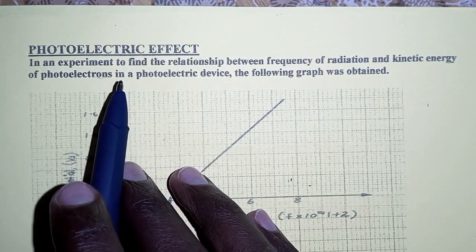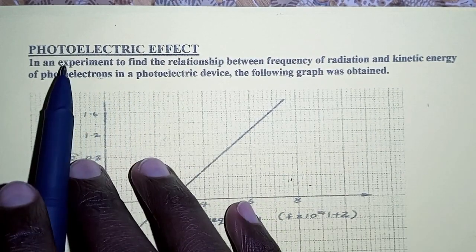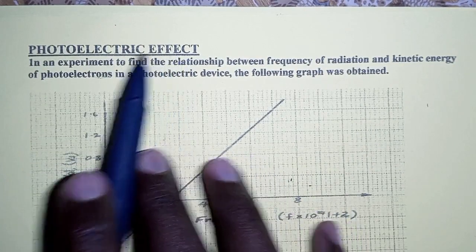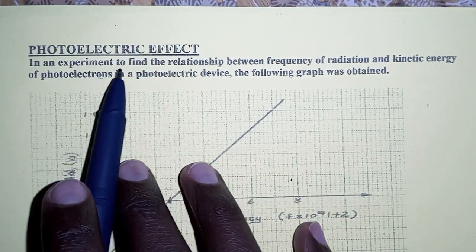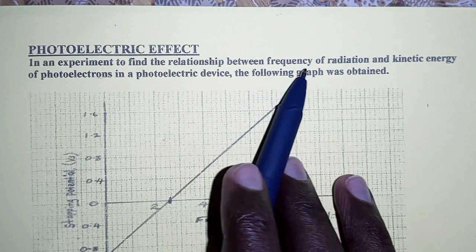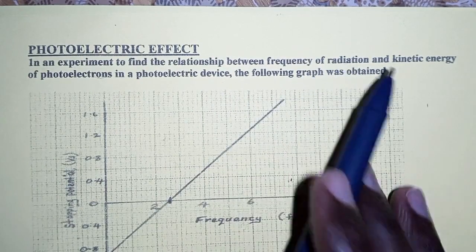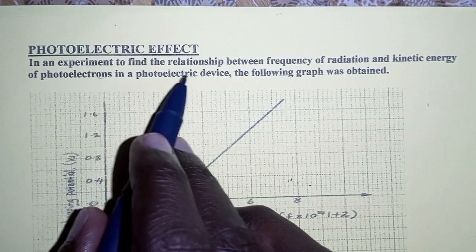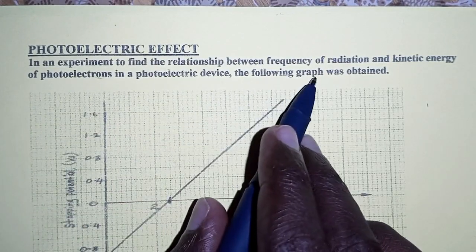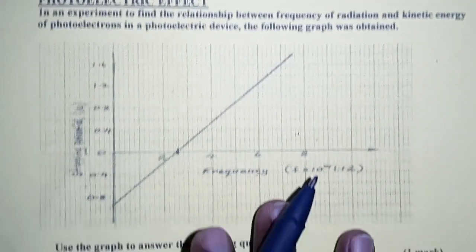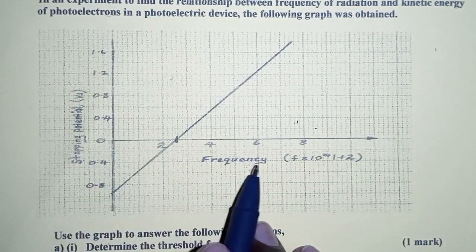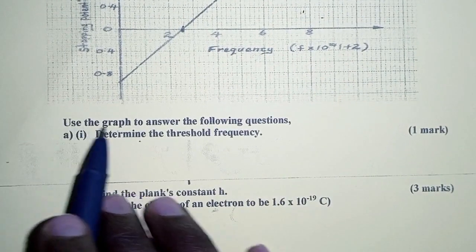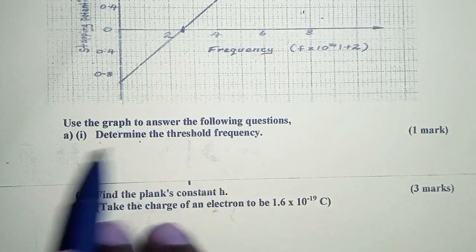Hello everyone, welcome back to our channel. In today's video we are going to talk about the photoelectric effect. In an experiment to find the relationship between frequency of radiation and kinetic energy of photoelectrons in a photoelectric device, the following graph was obtained. We have the graph of stopping potential against frequency. Use the graph to answer the following questions.